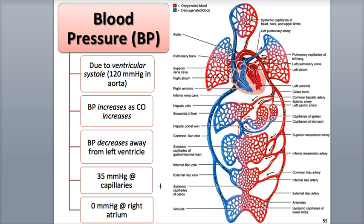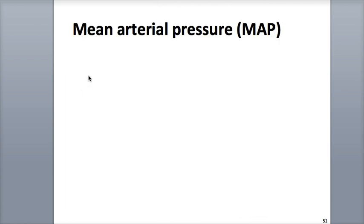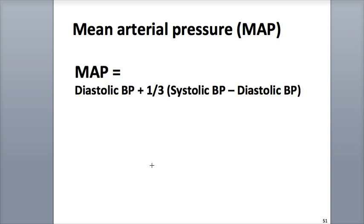Blood pressure decreases even more as blood moves through the systemic veins, and is around 0 millimeters of mercury as it enters the right atrium of the heart. The average arterial blood pressure is called the mean arterial pressure, or MAP, and is about one-third of the way between the systolic and diastolic blood pressures. It can be determined through this equation: mean arterial pressure equals diastolic blood pressure plus one-third of the quantity systolic blood pressure minus diastolic blood pressure.